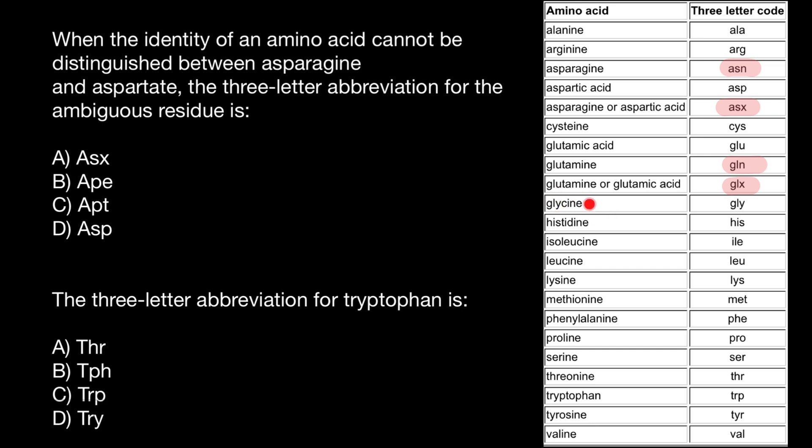Glycine is the only amino acid starting with G, so there's no conflict — it's just GLY. Histidine is the same story. But isoleucine, instead of ISO, has the abbreviation ILE. Why? Because isoleucine consists of two words: iso, meaning isomer, and leucine. So the first letter I comes from iso, and LE comes from leucine. This is another case where the three-letter abbreviation differs from what you'd expect.